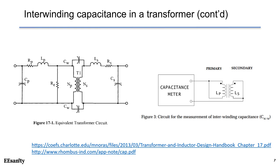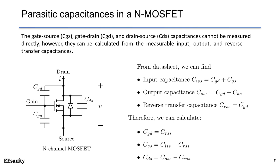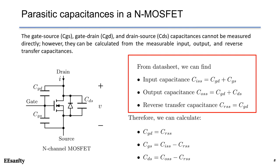Here is another example about parasitic capacitance in semiconductor devices, such as an N-channel MOSFET. We have parasitic capacitance between gate and source (Cgs), between gate and drain (Cgd), and between drain and source (Cds). From the datasheet, we can often find input capacitance, output capacitance, and reverse transfer capacitance listed as Ciss, Coss, and Crss. Using the relevant equations, we can determine Cgd, Cgs, and Cds.